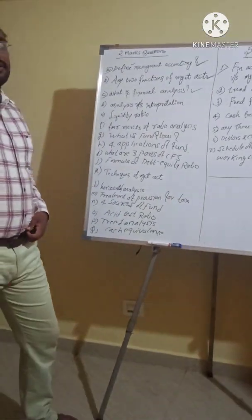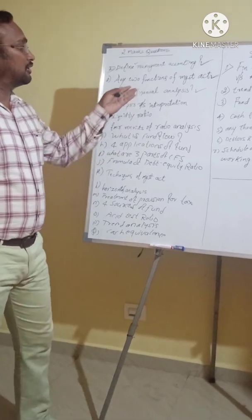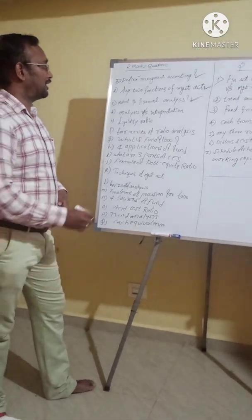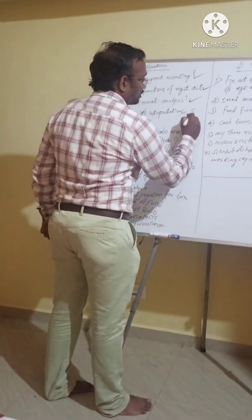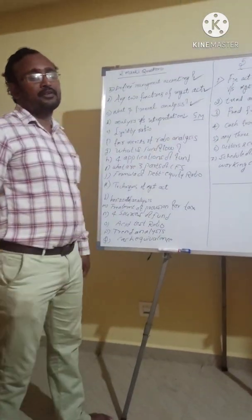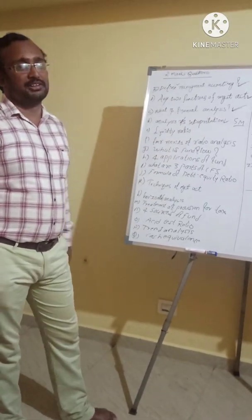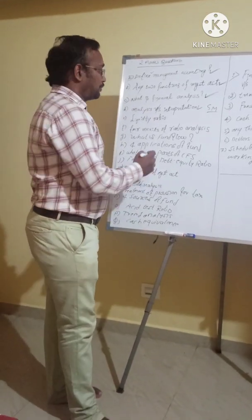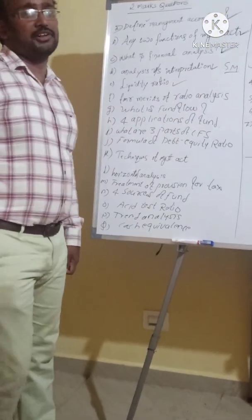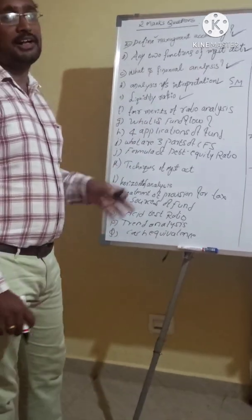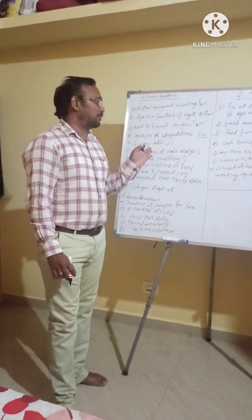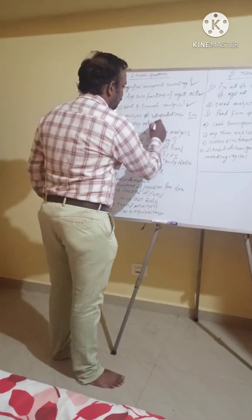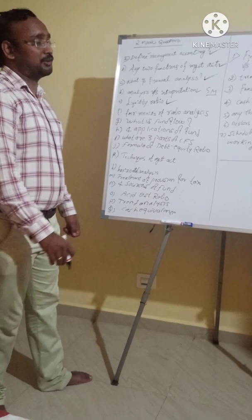Next question: meaning of financial analysis. Difference between analysis and interpretation — this is also a five-mark or two-mark question. Liquidity ratio — the formula may be asked, so write the formula of liquidity ratio. The formula is: liquid assets divided by liquid liabilities. Formula of liquidity ratio is important.